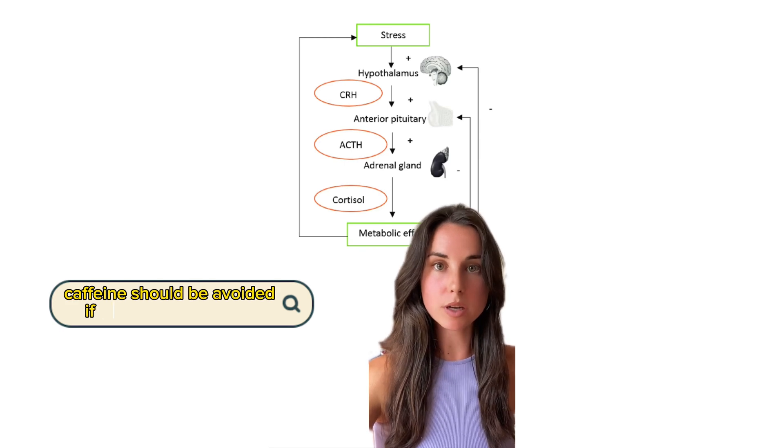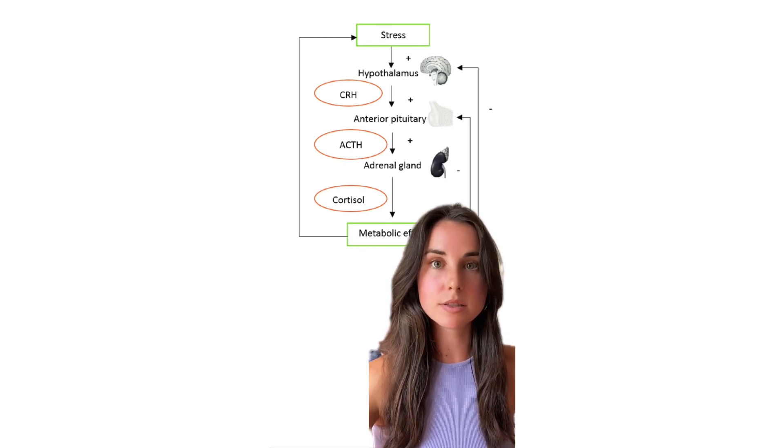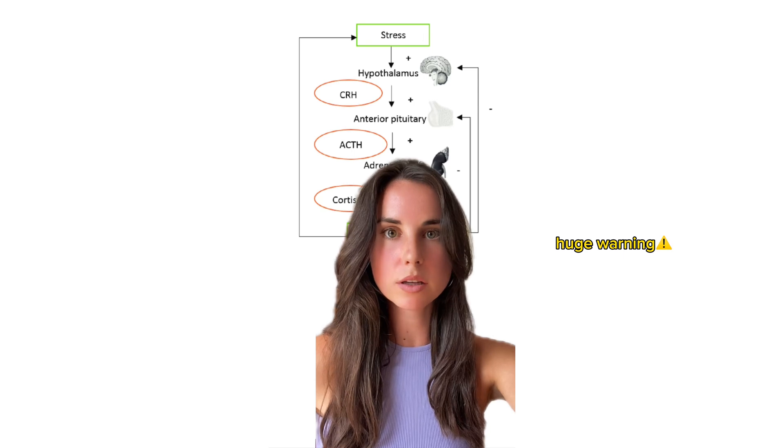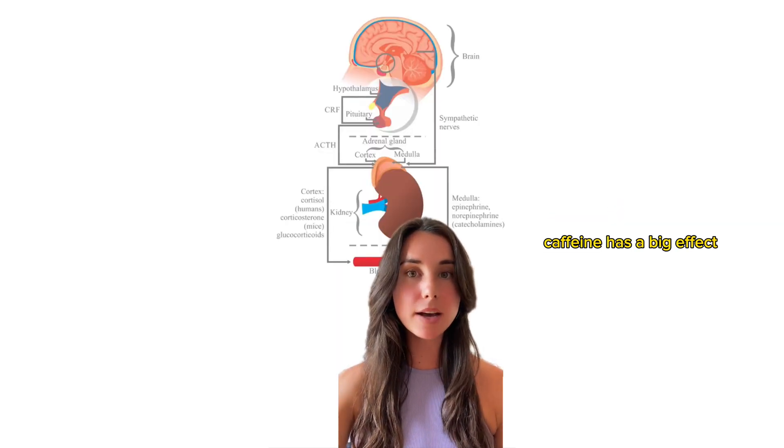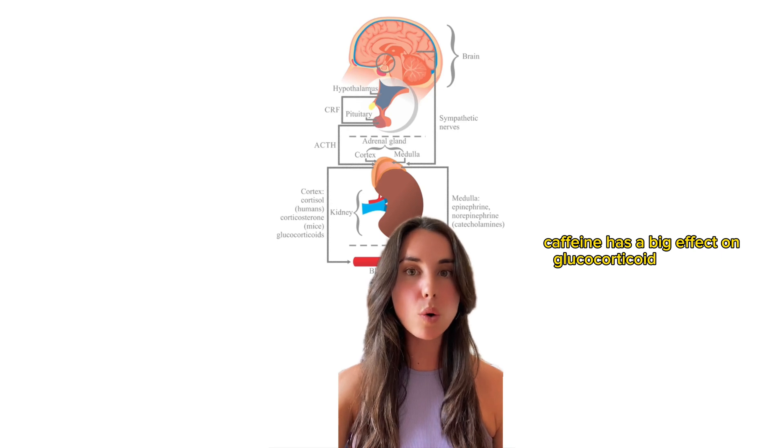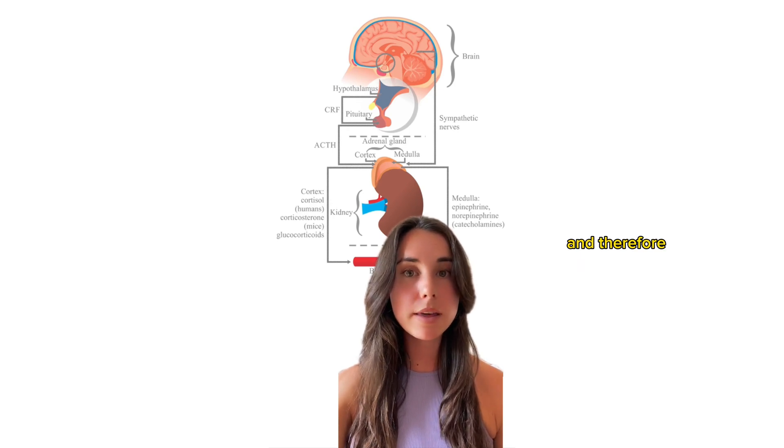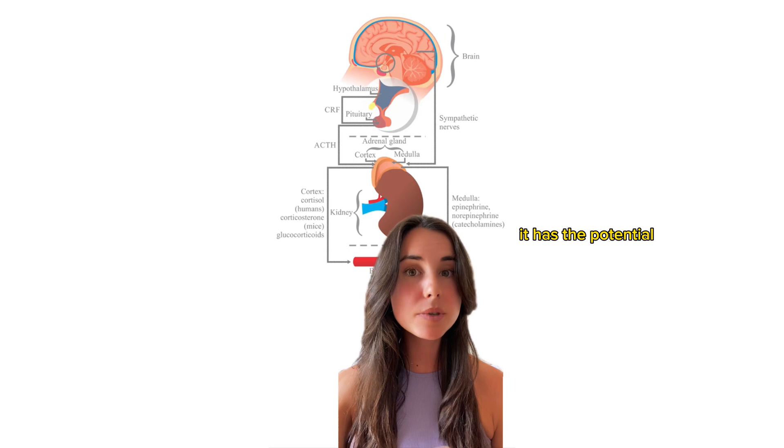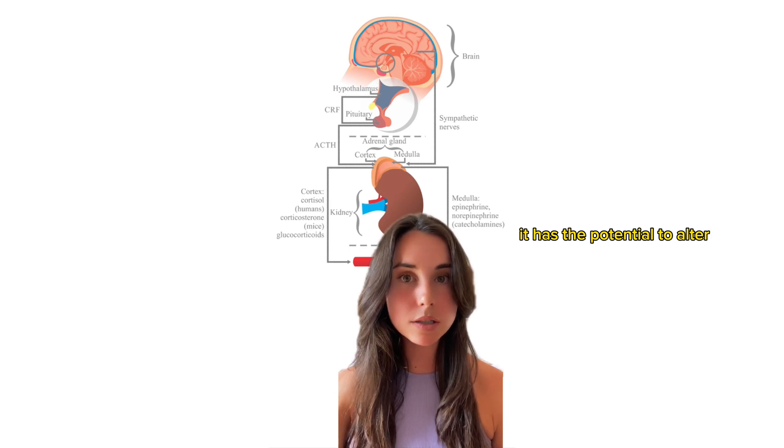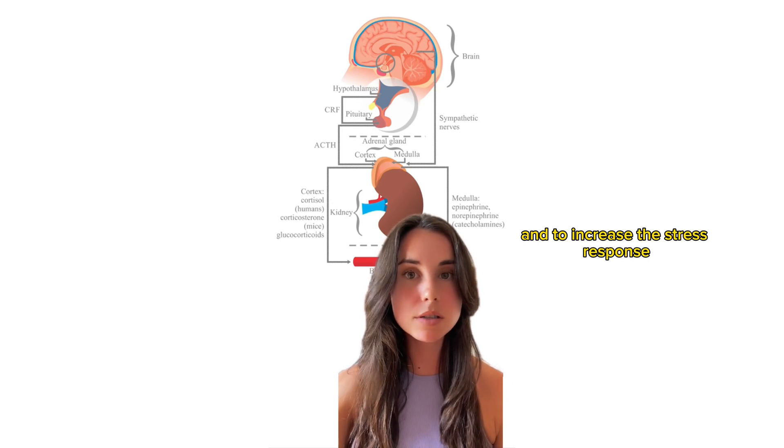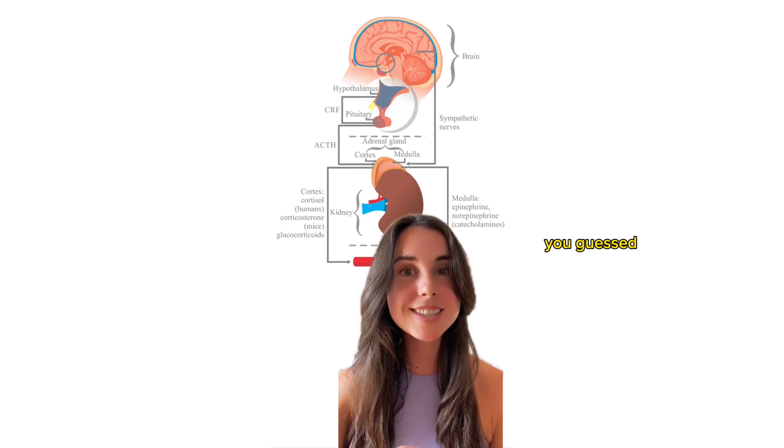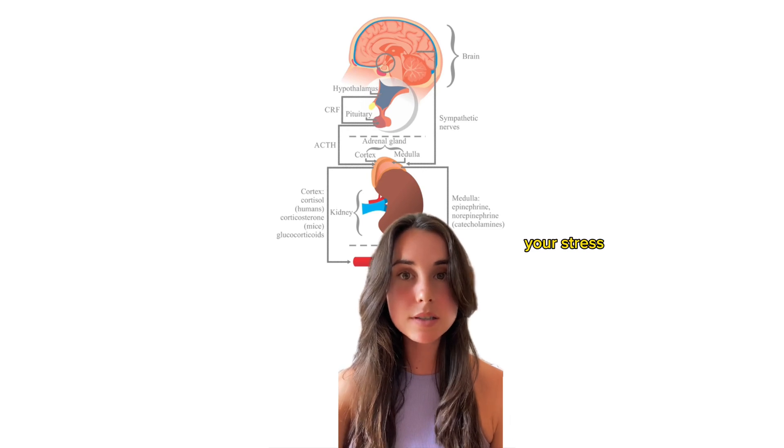Caffeine should be avoided if you're under stress. Huge warning, here's why: caffeine has a big effect on glucocorticoid regulation and therefore it has the potential to alter circadian rhythm and to increase the stress response.